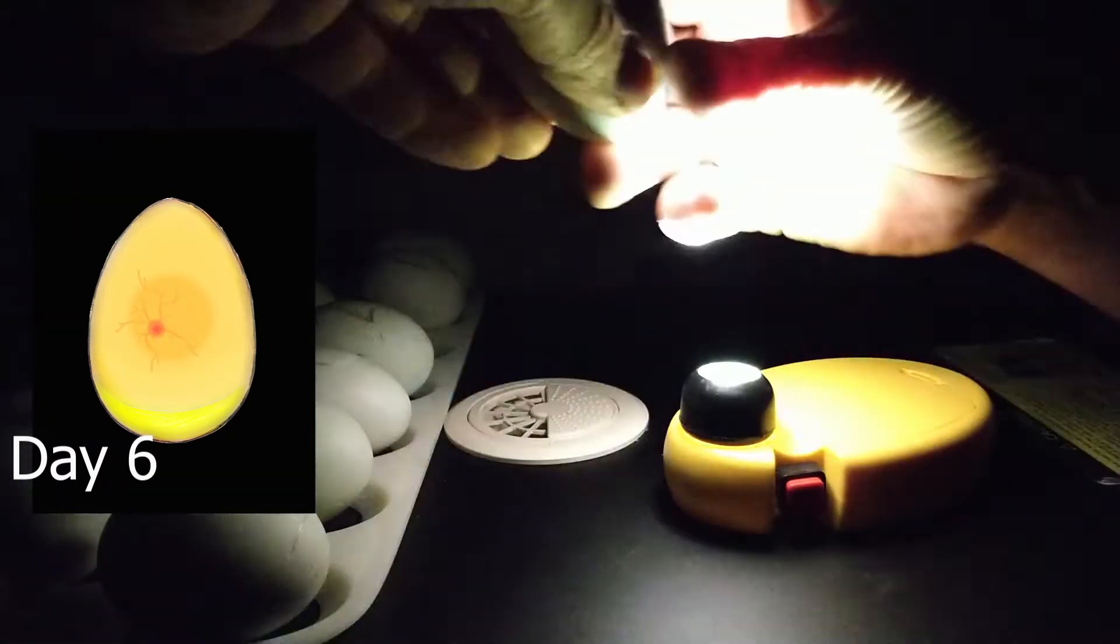So we'll just speed through all the other eggs. Out to number five we can see embryo in the middle, blood vessels around, and an air pocket at the bottom.